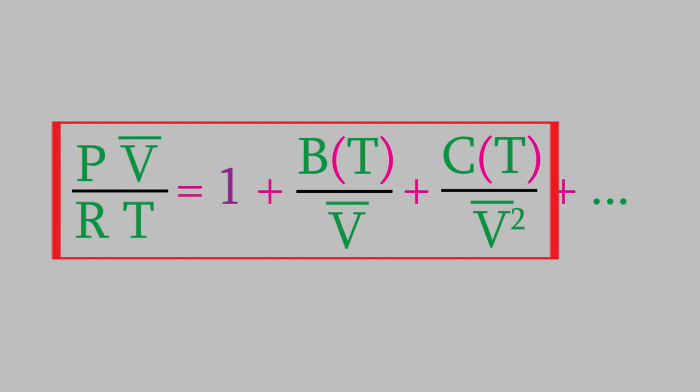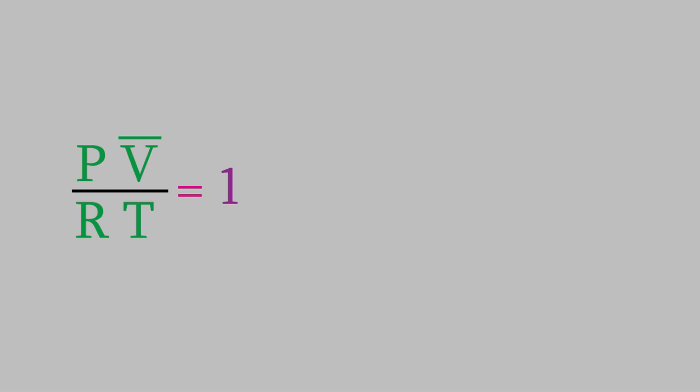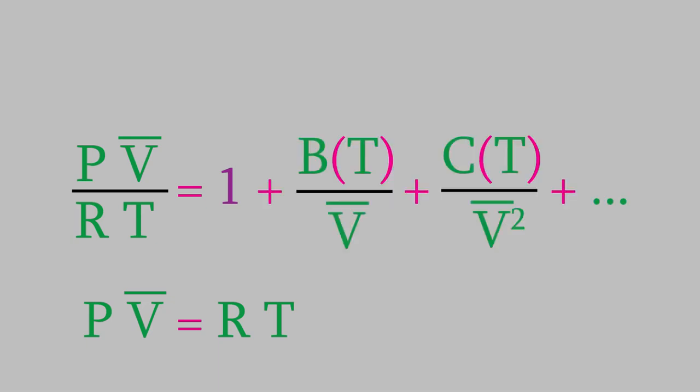Notice that if we only use the first term, we have PV bar divided by RT equals 1. That's exactly what we got from the ideal gas law. So, we can think of the virial equation as the ideal gas law with a series of correction terms added to it, each of them fine-tuning the equation so that it becomes a little bit more accurate.